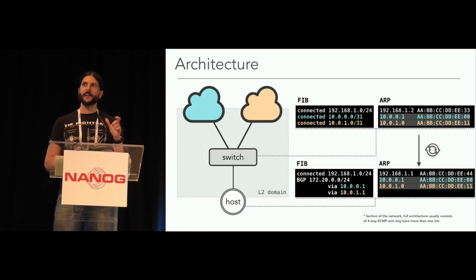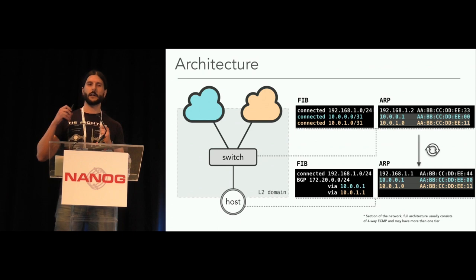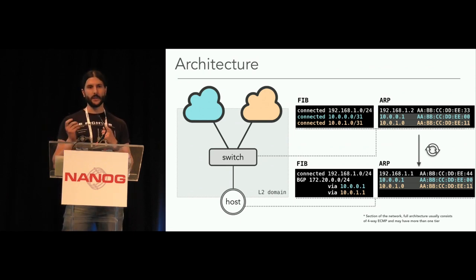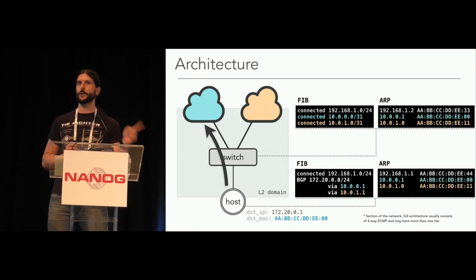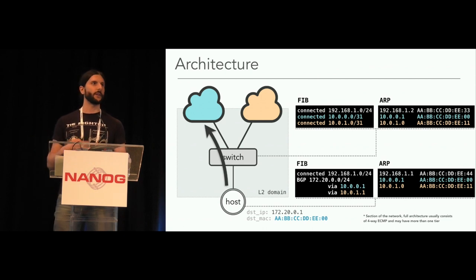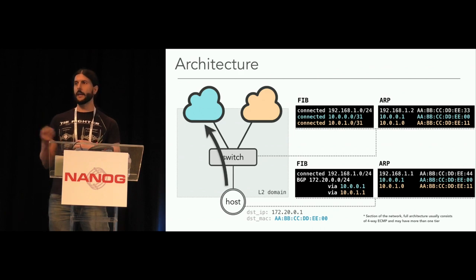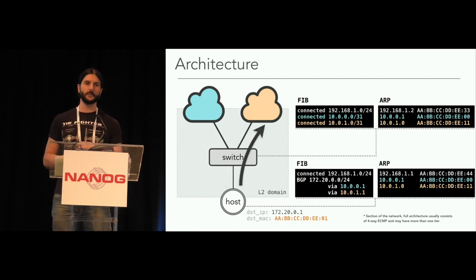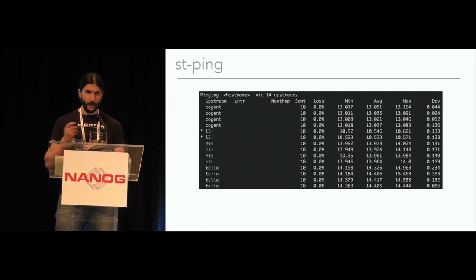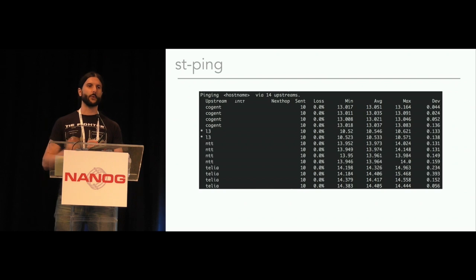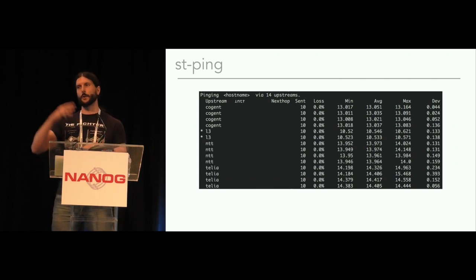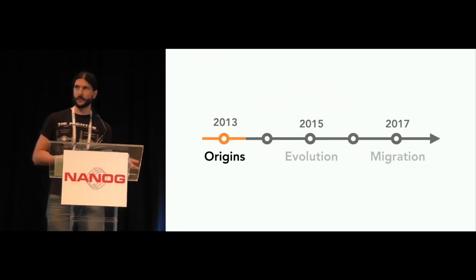Now you synchronize the ARP table from the switch to the host — sending all the ARP entries that belong to the transit. So if the host wants to send traffic via the blue transit, it just sets the destination MAC address corresponding to that transit's router. The switch then does what it does best: switch traffic. If the host wants to send via the orange transit, it's just a matter of setting the corresponding MAC address. That was the original control plane.